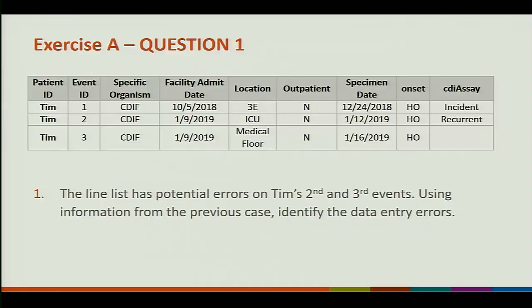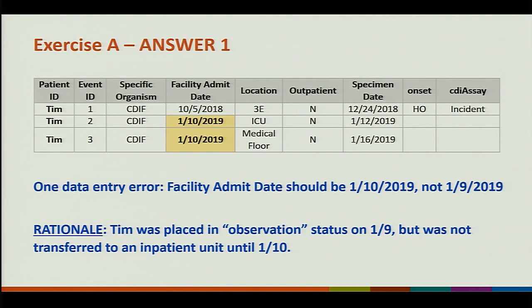We are going to start with exercise A, question number one. The line list has a data entry error on Tim's second and third event. The facility admission date was incorrect — it should actually be 1-10, not 1-9. The rationale is because January 10th is when the patient was first placed on that inpatient unit. It doesn't matter when the facility put them in admission or observation status; what counts is when the patient physically moves to that inpatient unit.